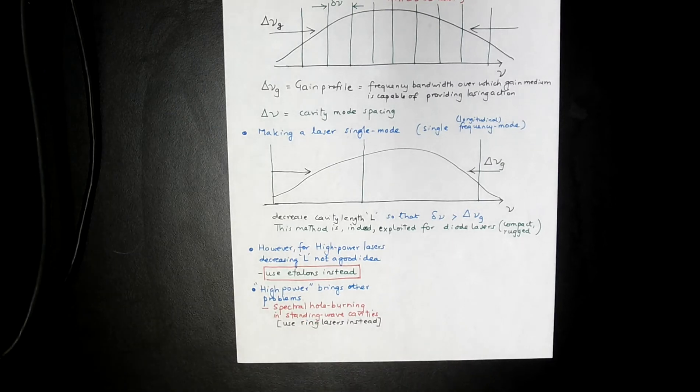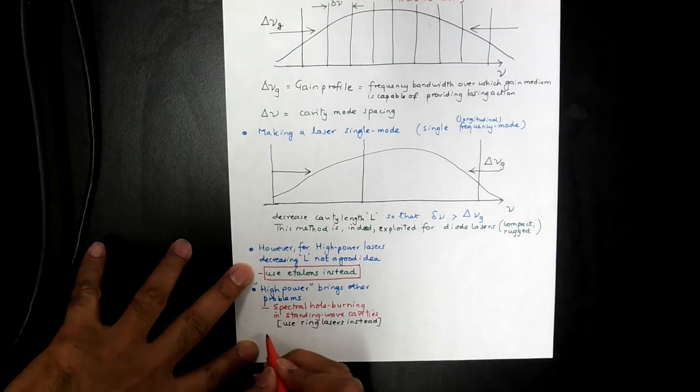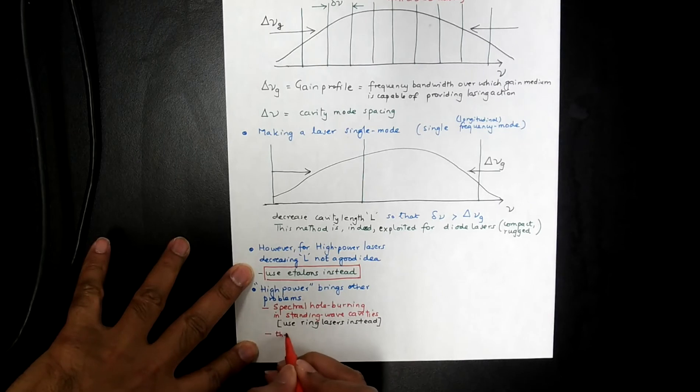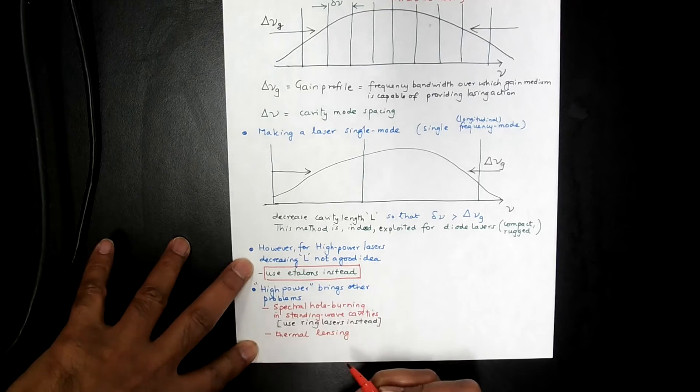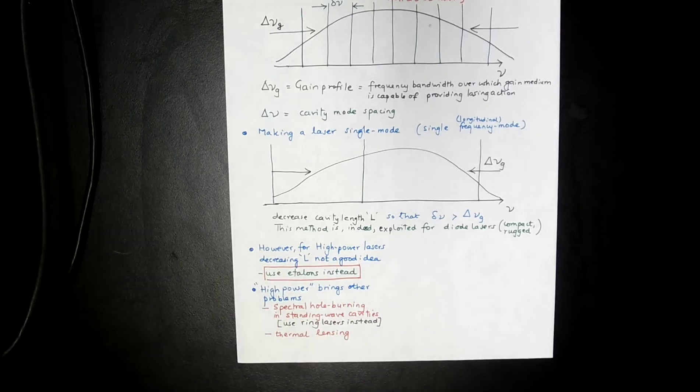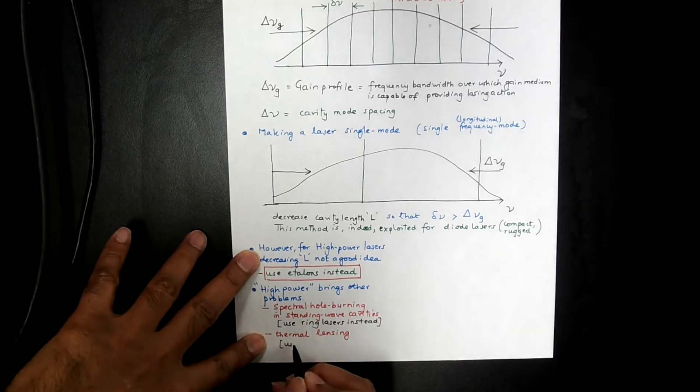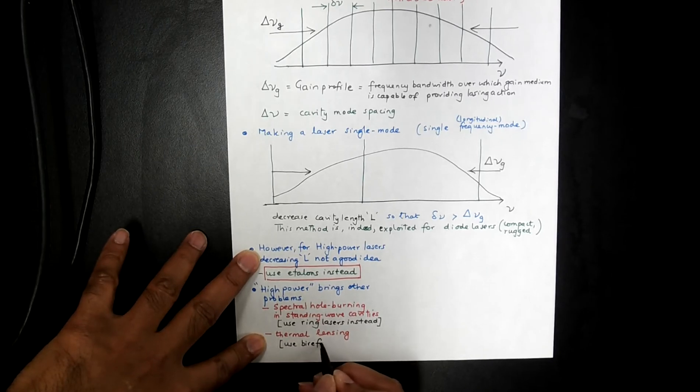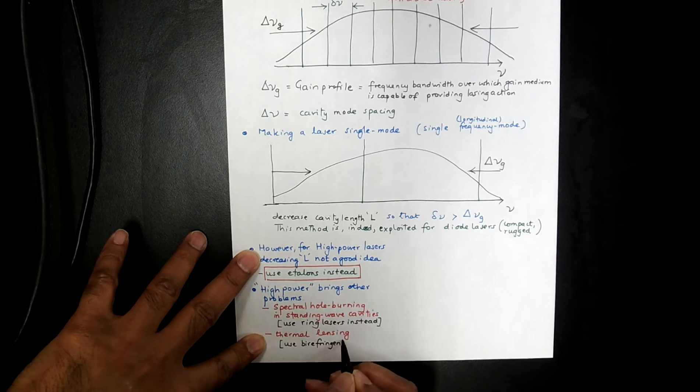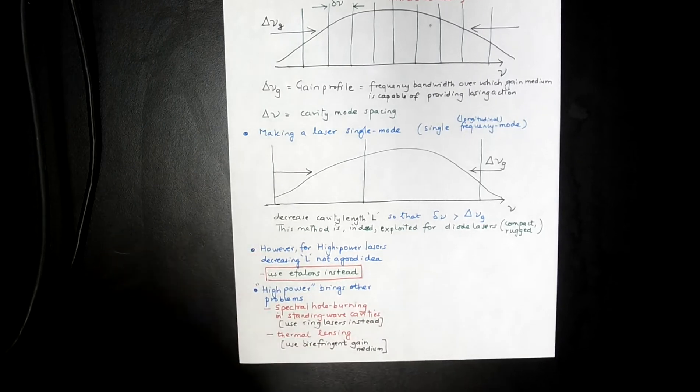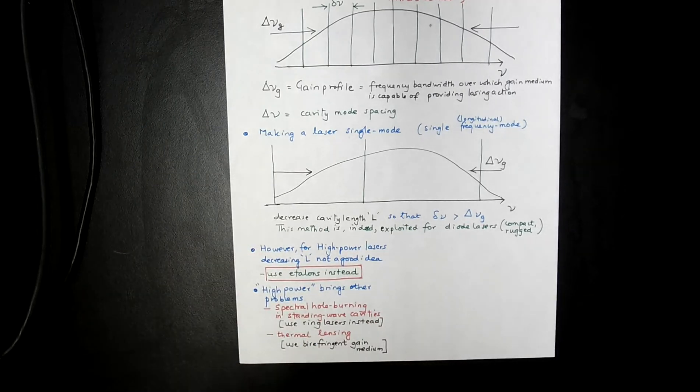The other problem that we discussed was that of thermal lensing. That was the last topic that we did, and this we avoided by use of birefringent gain medium. So those are the things we've discussed so far.